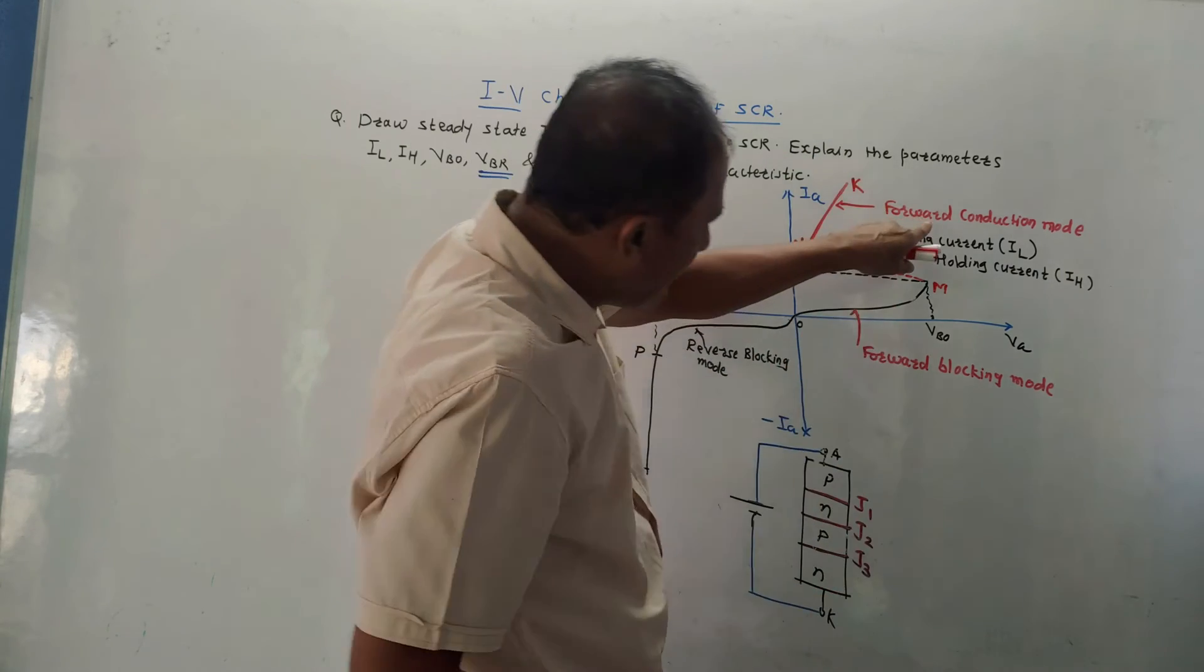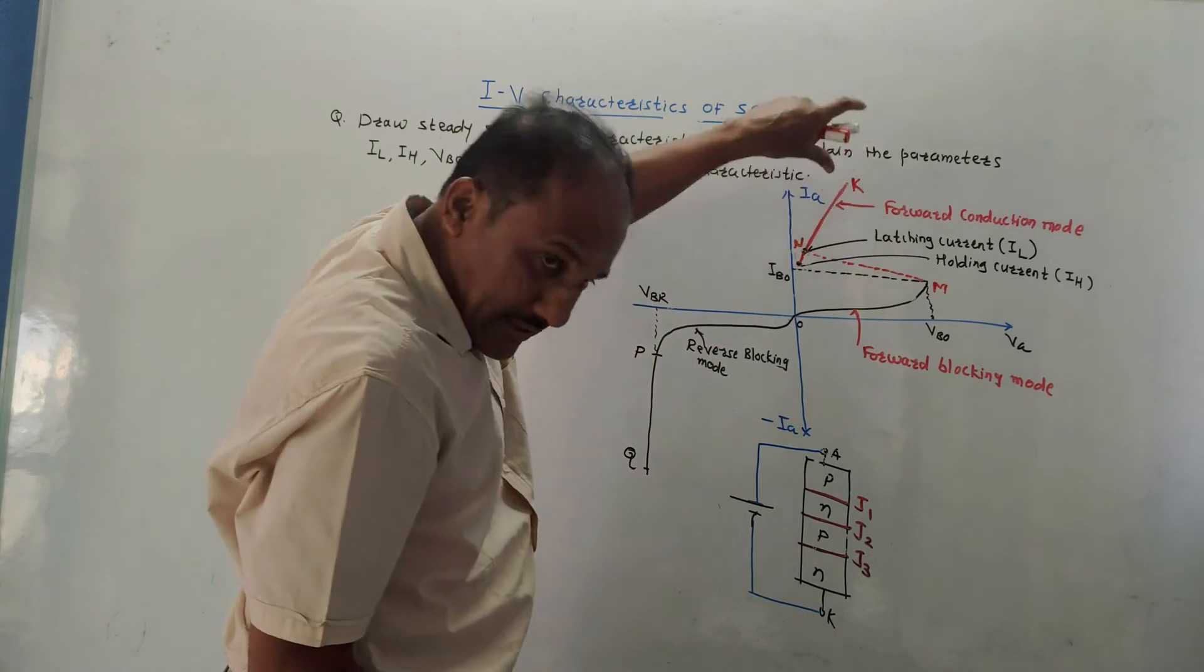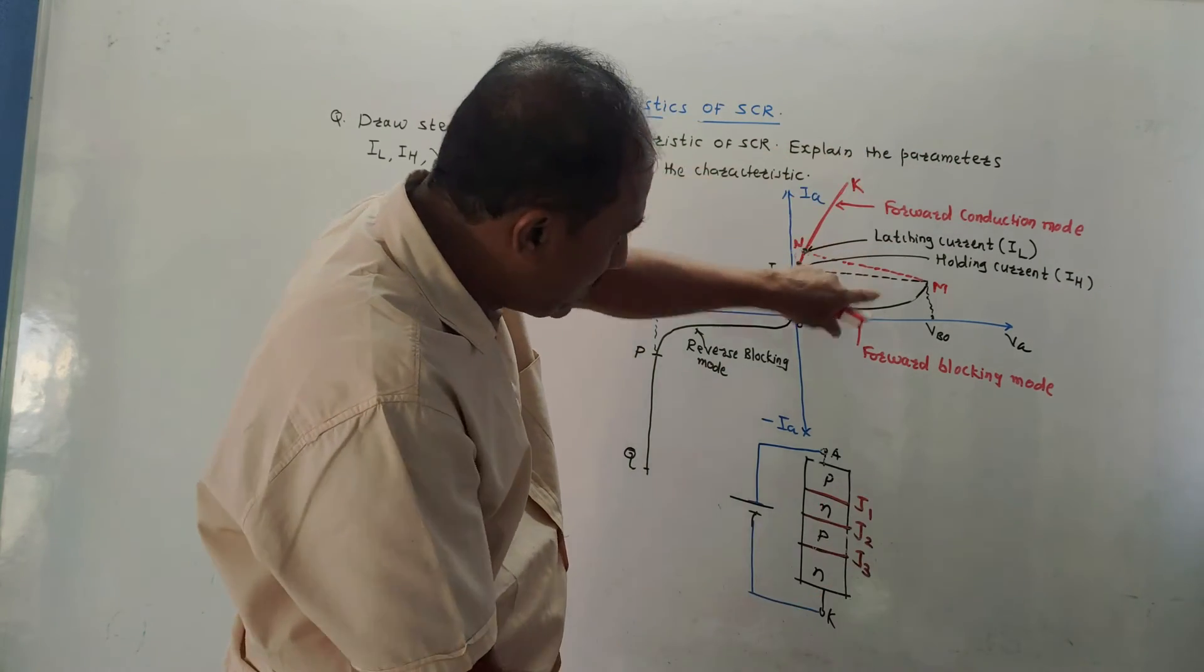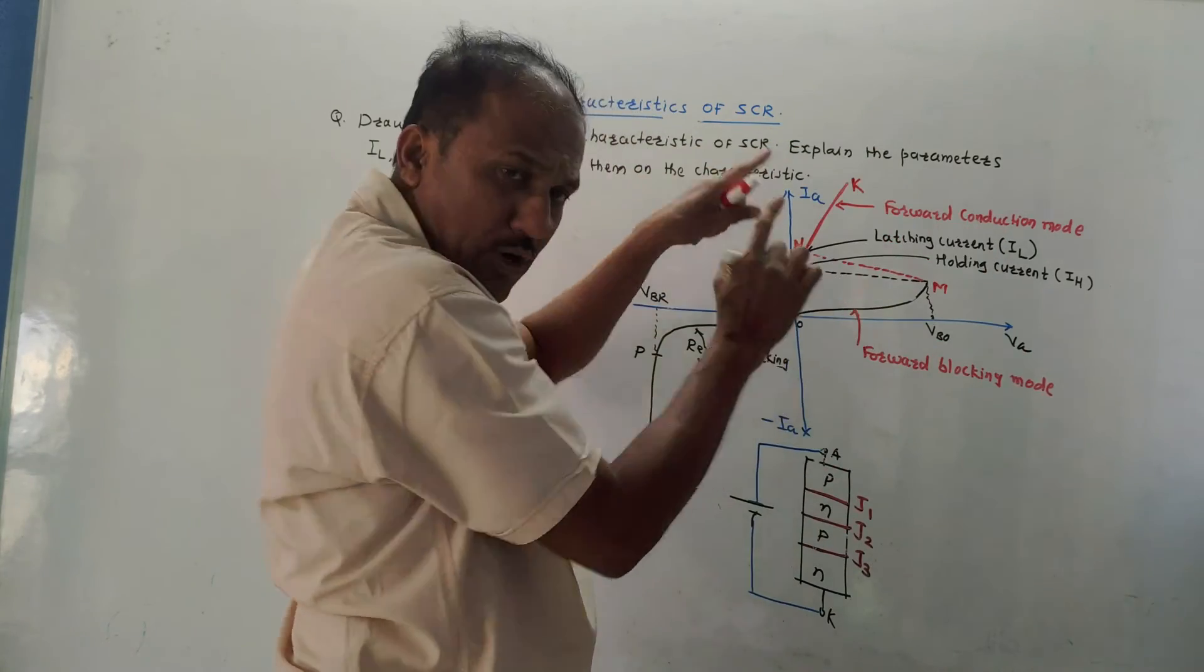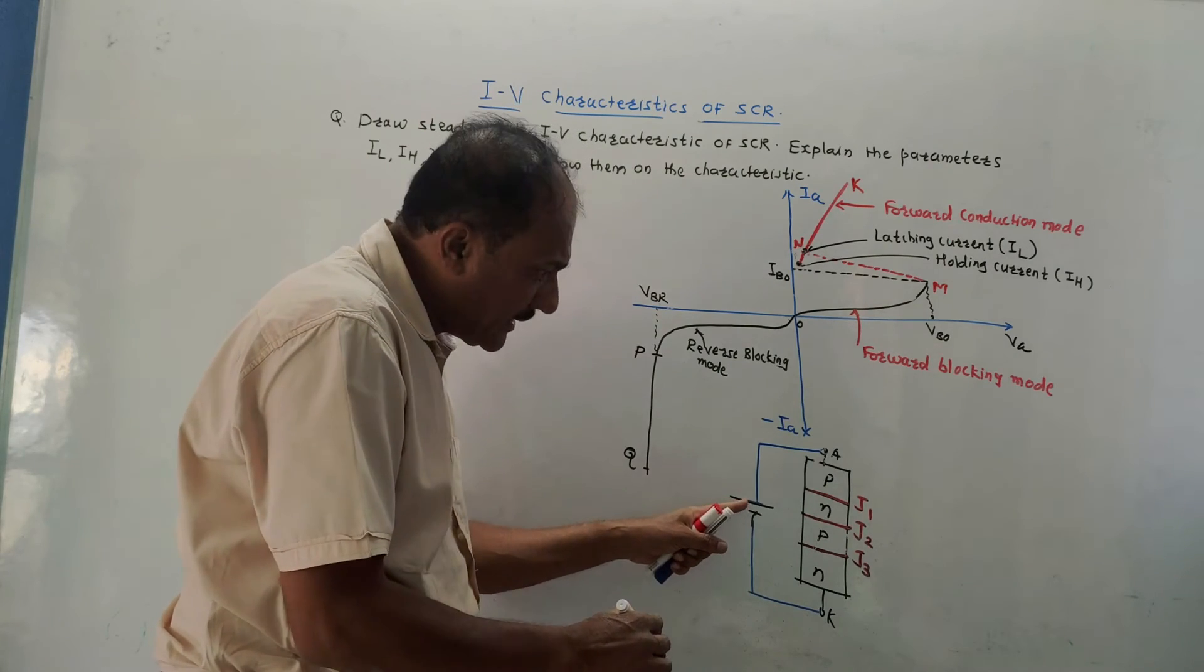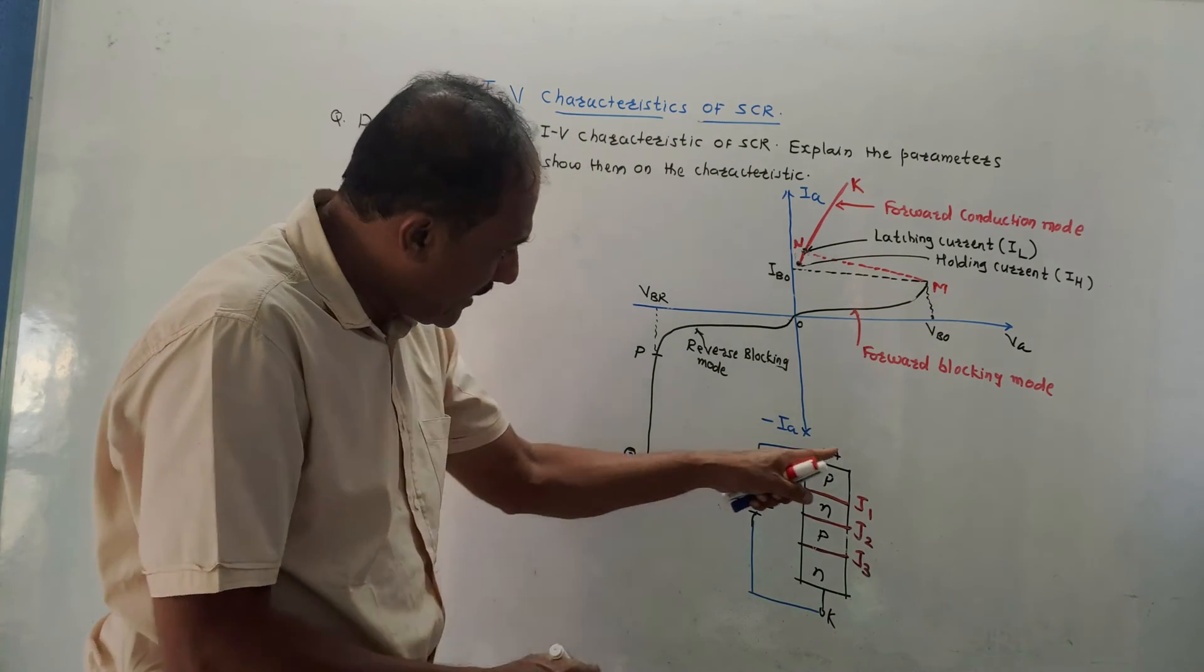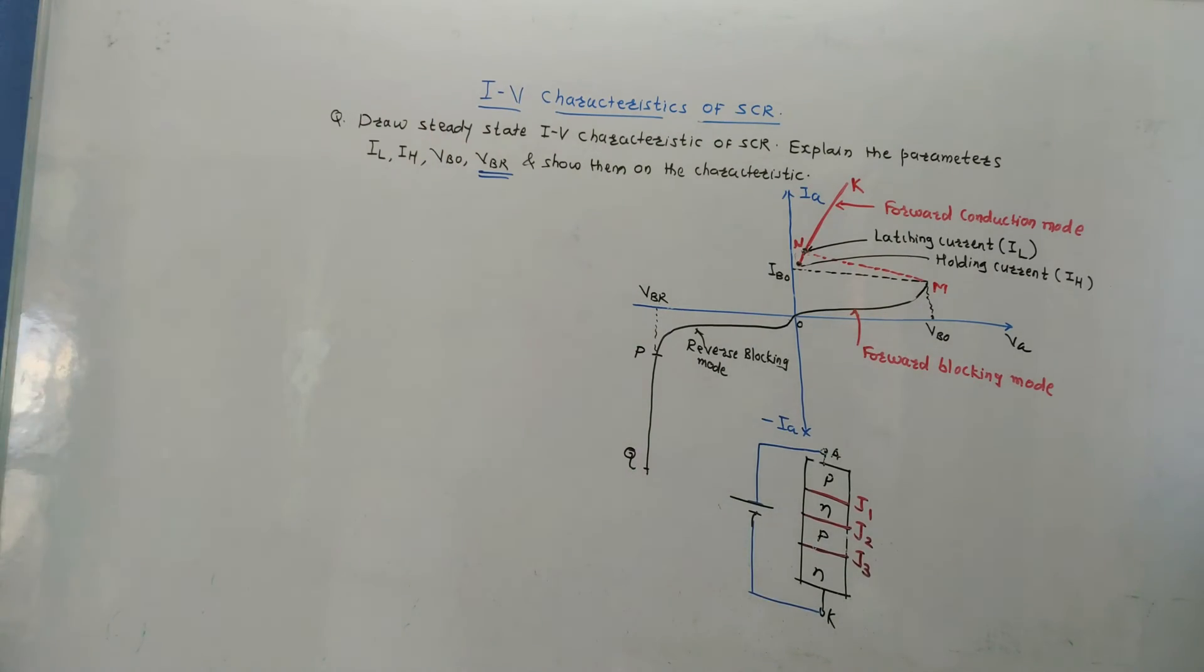So line NK indicates the forward conduction mode. The diode, rather SCR, is transferred from forward blocking mode to the forward conduction mode by applying the gate current or by increasing the voltage, positive voltage, between terminals anode and cathode. That is, between terminals A and K.